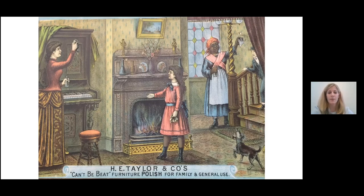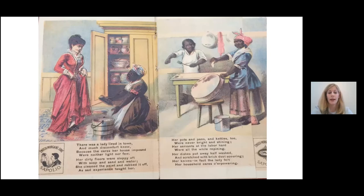This slide is for H.E. Taylor's furniture polish. This advertisement is even more explicit in its representation of black servitude, but I think it's targeting the same type of consumer. On the right side of this trade card, we see a black woman polishing a brass lamp, while on the left side, the white employer cleans the piano. Here the women are working alongside one another. By contrast, this pamphlet for the company Enoch Borgen's Sons depicts an African-American servant kneeling before her white employer in a dynamic that echoed that of the antebellum era.